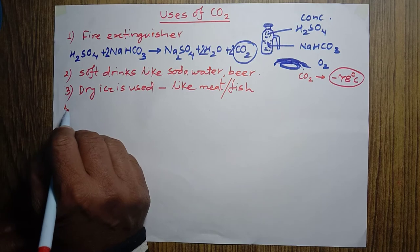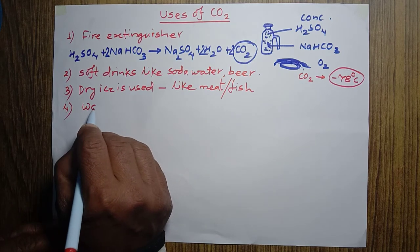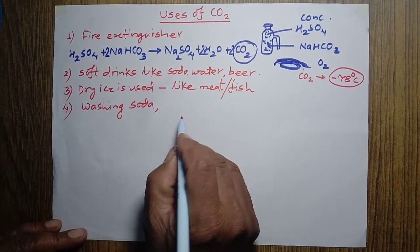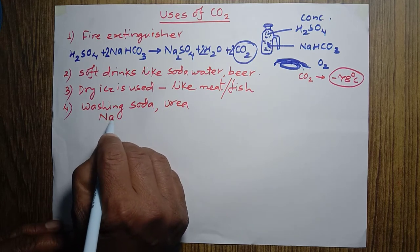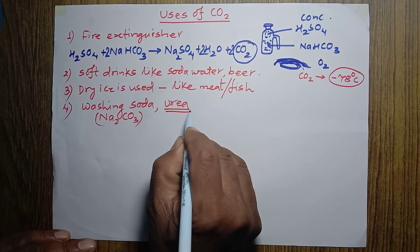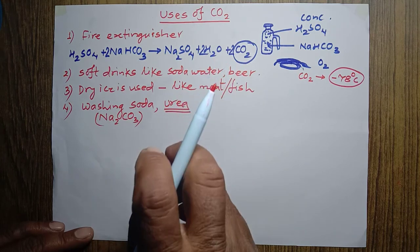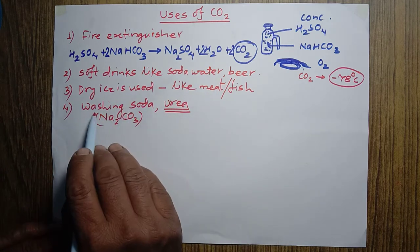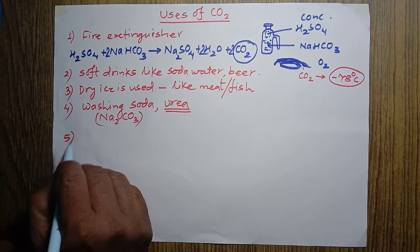Another important use is in the manufacturing of washing soda and urea. Washing soda is sodium carbonate (Na2CO3). Urea is a nitrogenous fertilizer used in fields to supply nitrogen to plants, which is essential for their growth. Carbon dioxide is used in the manufacturing of both washing soda and urea.